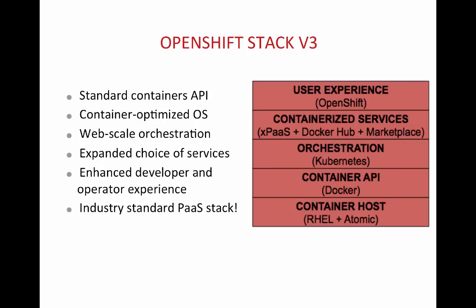Let us start by looking at OpenShift version 3's technology stack. Most of you may already know that OpenShift version 3 is designed to run Docker containers. Docker provides a means of packaging applications in lightweight containers. These containers are smaller than virtual machines, they have improved performance, and they are flexible to run in multiple environments. While Docker defines a container format and builds and manages individual containers, you would still need an orchestration tool to deploy and manage sets of these Docker containers. Kubernetes is a tool for that — it orchestrates and manages Docker containers.